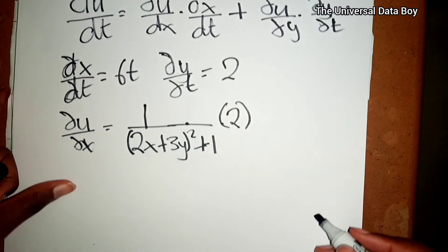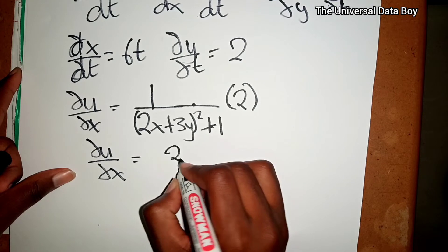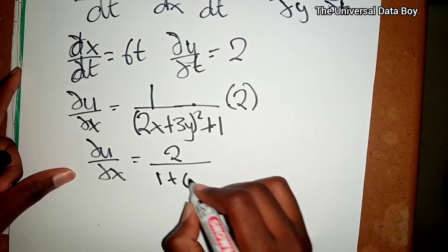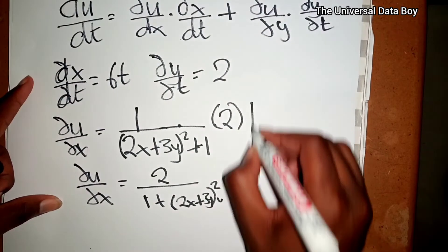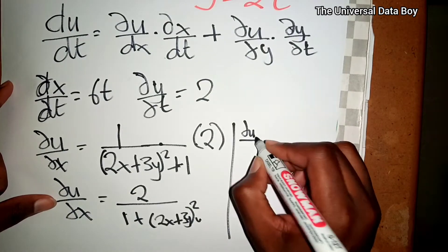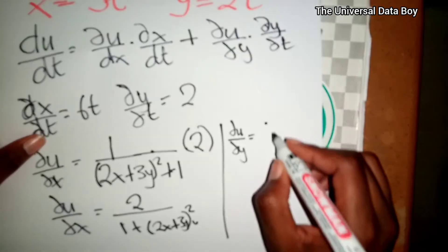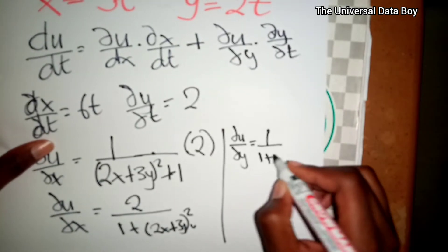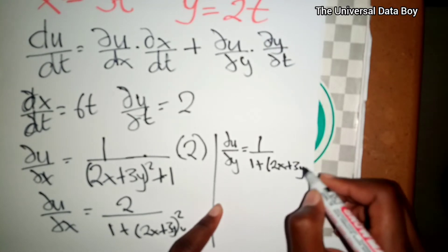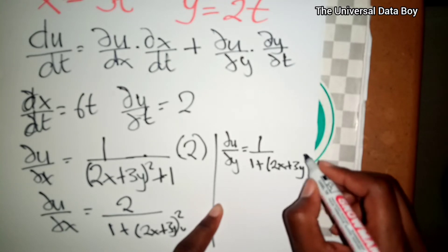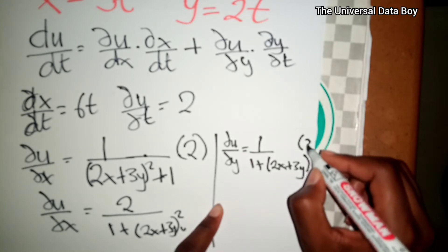So ∂u/∂x equals 2 over 1 plus (2x + 3y) squared. Then ∂u/∂y is given by 1 over 1 plus (2x + 3y) squared, and the derivative of the inside with respect to y is 3.